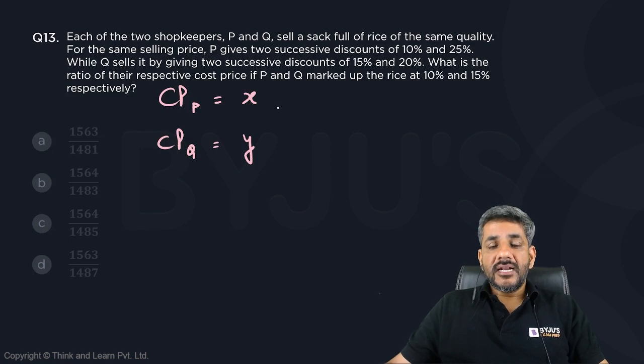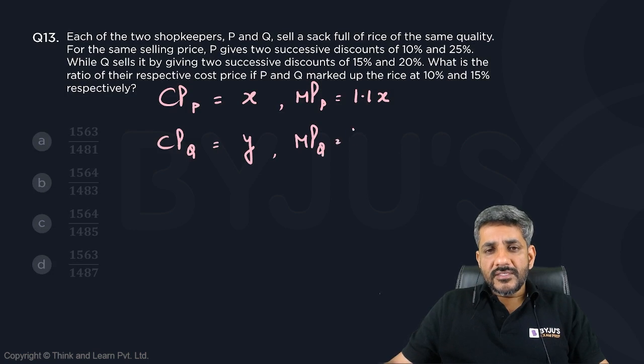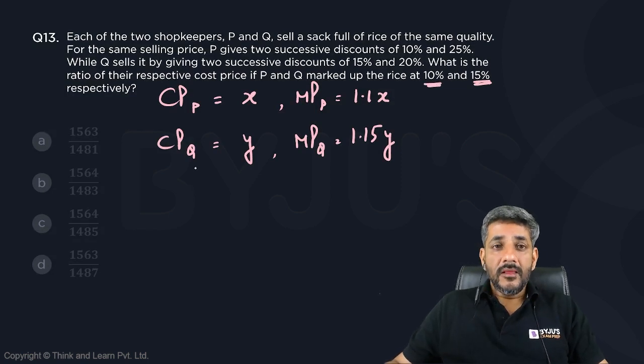P has marked up the price at 10%, so the marked price of P is 1.1X. The marked price of Q is 1.15Y because Q has marked up at 15%.